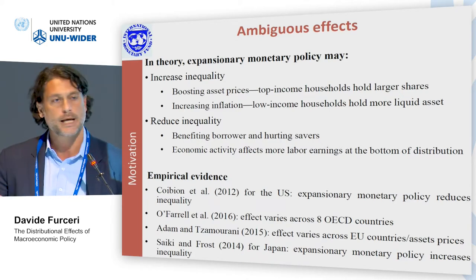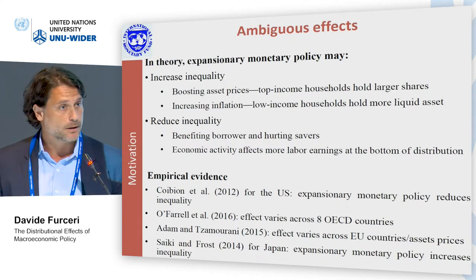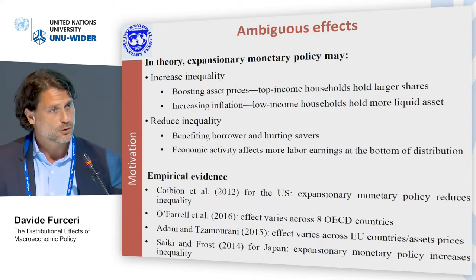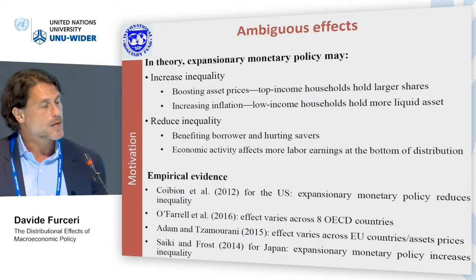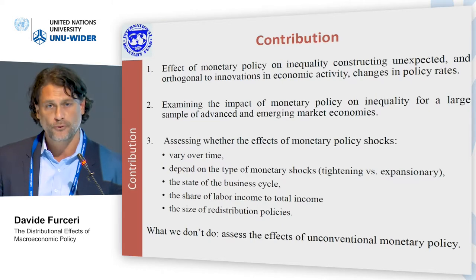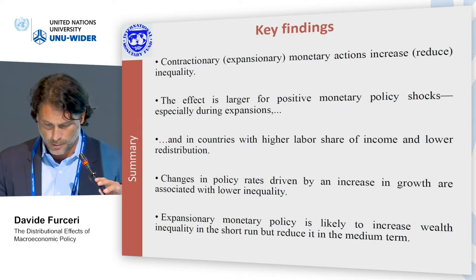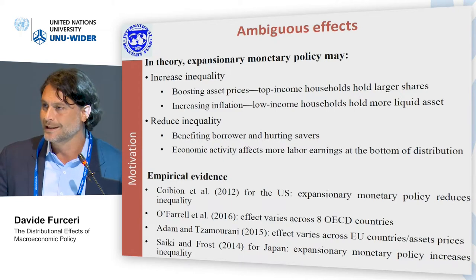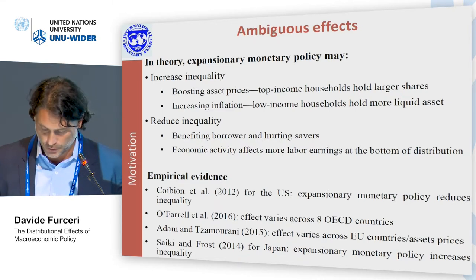Ultimately, to assess whether expansionary monetary policy is going to increase or reduce inequality, we have to do this empirically. The empirical evidence has mostly focused on the US or a few advanced economies. Using exogenous changes in monetary policy actions, the main paper finds that monetary policy implemented by the Fed in past years has actually reduced inequality. The case for Japan or other countries is less clear, and there has been even less effort in identifying exogenous monetary policy actions for these countries.